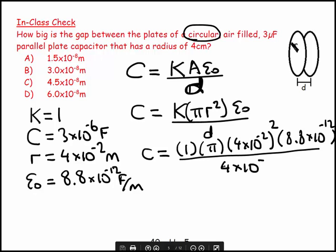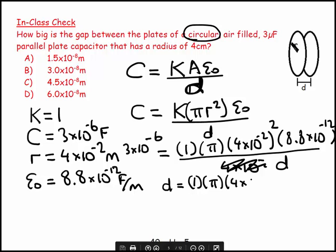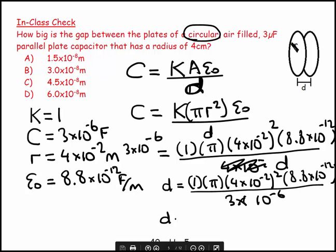It's late at night. That means I had my capacitance, which was 3 times 10 to the minus 6. So now let's do the thing right and rearrange. D equals 1 times pi times 4 times 10 to the minus 2 squared times 8.8 times 10 to the minus 12, all divided by 3 times 10 to the minus 6.